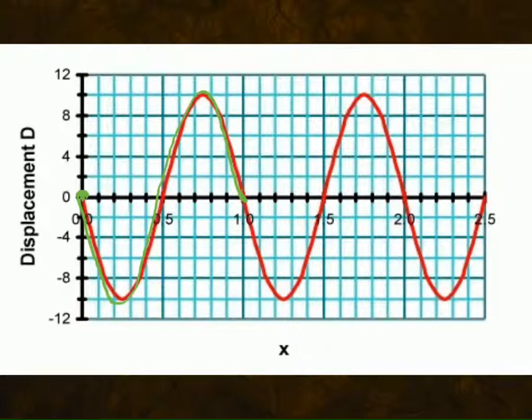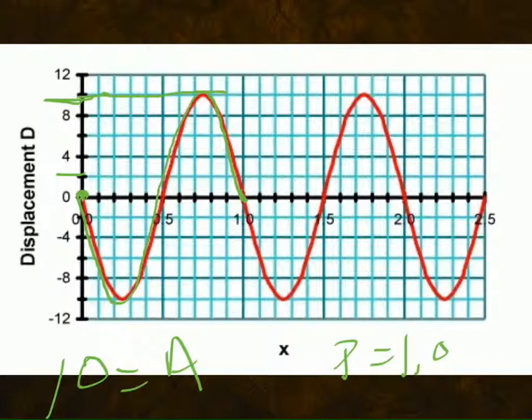So what is our amplitude in this one? Amplitude is 10. How do I know that? Because these lines are going by twos. 2, 4, 6, 8, 10. What is our period? The period starts at zero and it ends at 1.0. So our period is going to be 1.0.